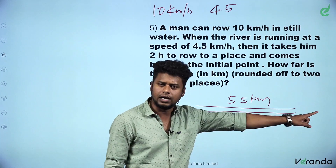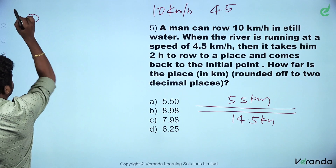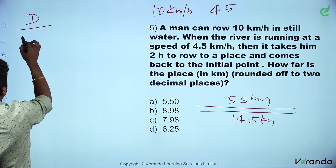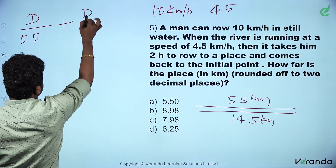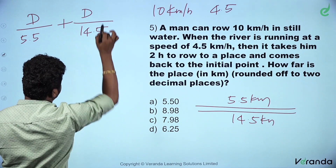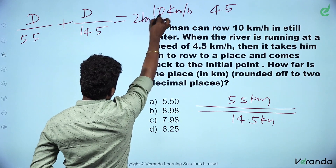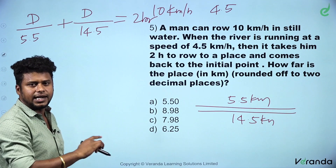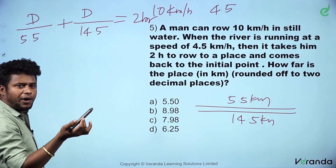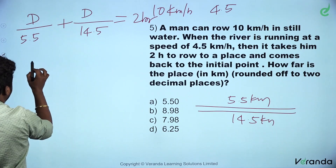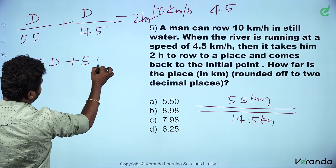Distance is same. The downstream speed is 14.5 km/h and upstream speed is 5.5 km/h. Using time equals distance over speed: D/14.5 plus D/5.5 equals 2 hours. Cross-multiplying: 14.5D plus 5.5D over (14.5 into 5.5) equals 2.